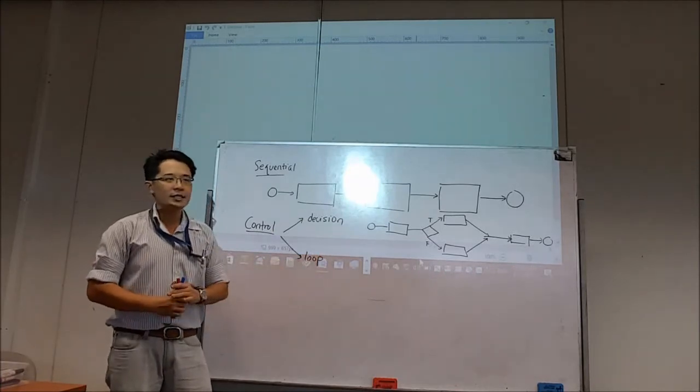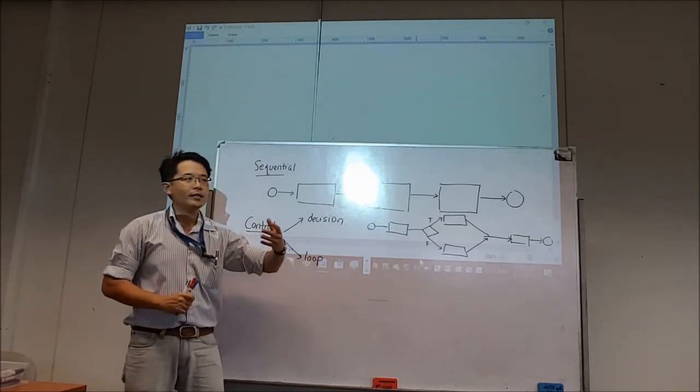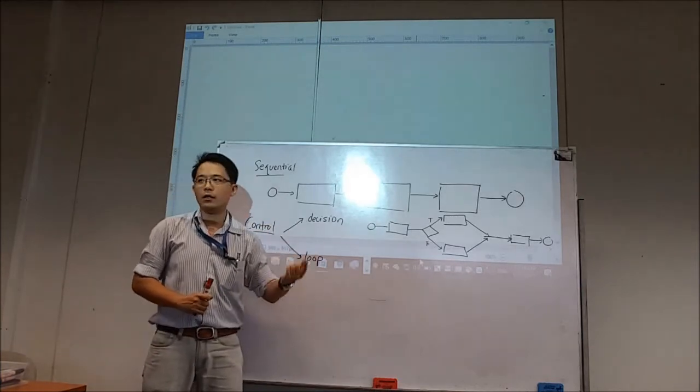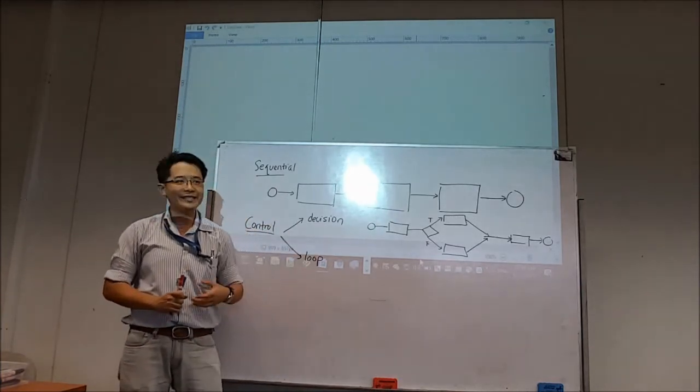Why is there a decision in loop? Because you have to decide whether the repetition has to be continued or not. That's why there is a decision.